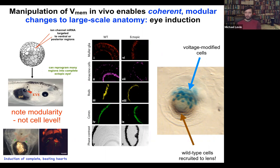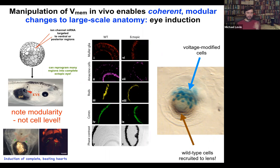In the textbook, it will say that only anterior ectoderm is competent to become eye, and that's true if you use canonical inducers like PAX6, the master regulator transcription factor. But if you go upstream of that and actually re-specify the bioelectric pattern, then you can induce these eyes anywhere — on the tail, in the gut, anywhere you want. And if you make these eyes, they can have all of the same components that normal eyes have: lens, retina, optic nerve, and so on.